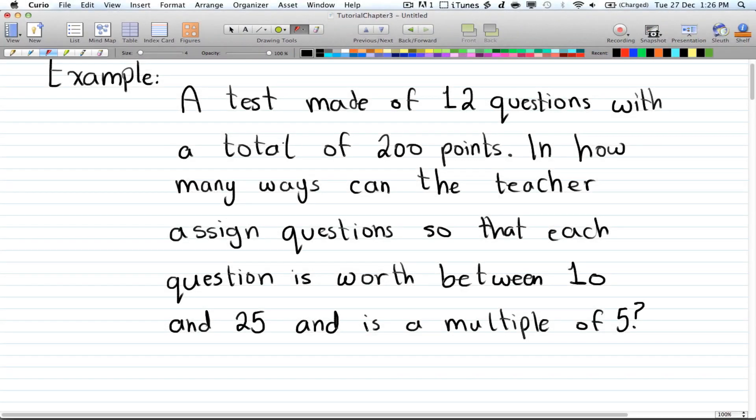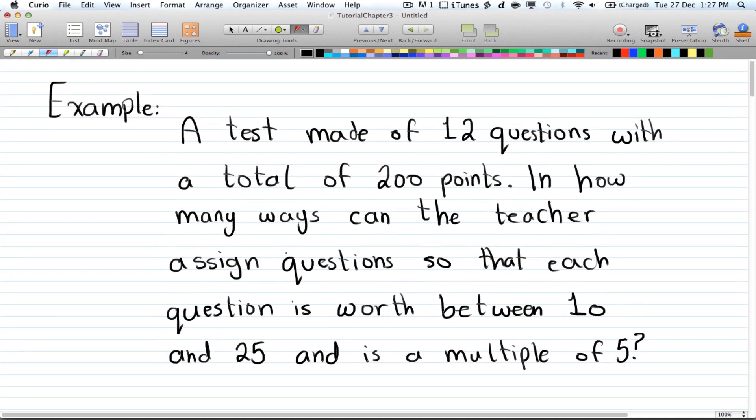Welcome to your 14th tutorial in Discrete Math 2. Here we have an example of the inclusion and exclusion principle. The example is a test made up of 12 questions with a total of 200 points. In how many ways can the teacher assign questions so that each question is worth between 10 and 25 marks and must be a multiple of 5?